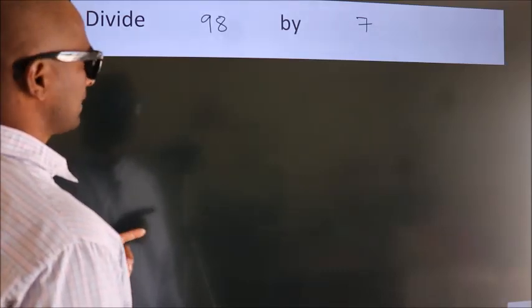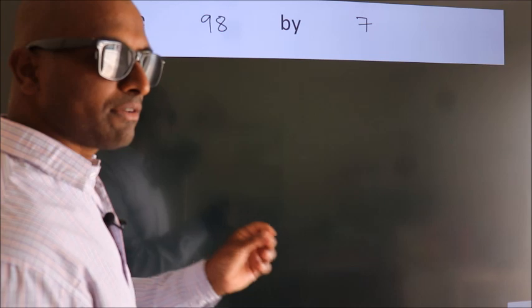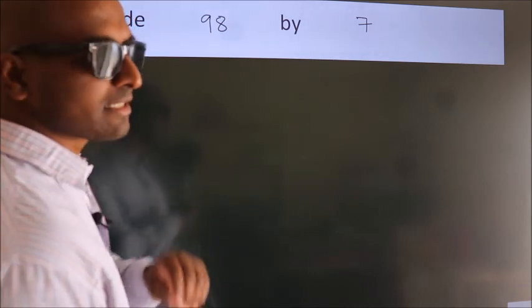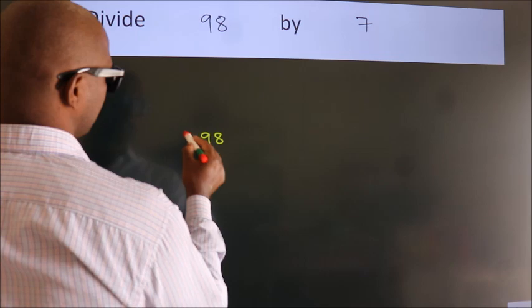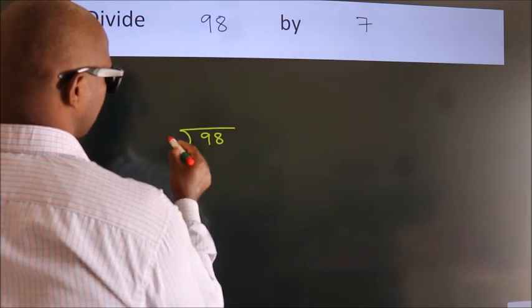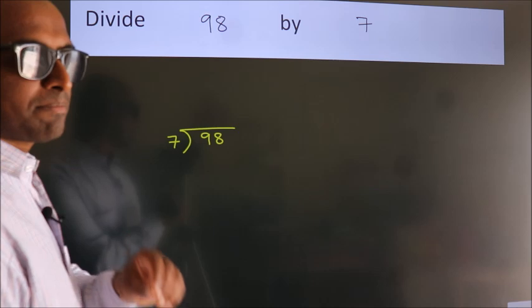Divide 98 by 7. To do this division, we should frame it in this way: 98 here, 7 here. This is your step 1.